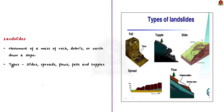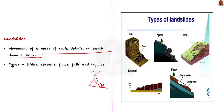A landslide is defined as the movement of a mass of rock, debris, or earth down a slope — it occurs when a large amount of rocks, soil, or debris move down a slope, either quickly or slowly over time. Think of it like pouring water on a pile of sand on a hill — the sand becomes wet and heavy, can't stick together like before, and starts to slide down. There are different types of landslides: slides, spreads, flows, falls, and topples. Sometimes a landslide can be a combination of these types.